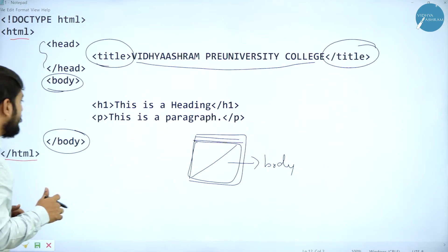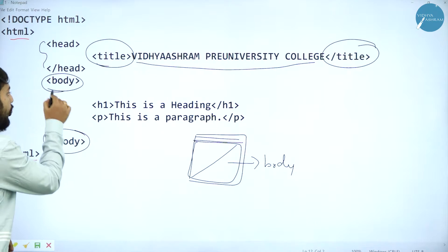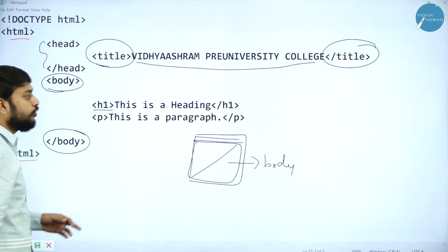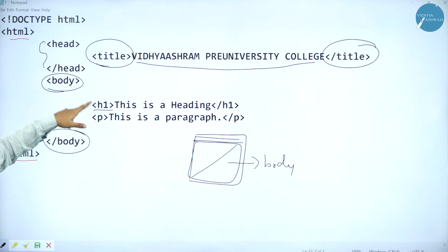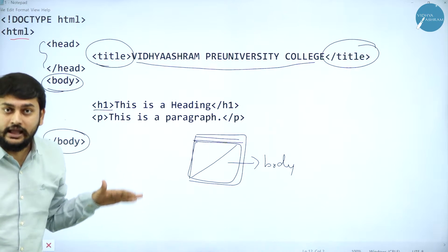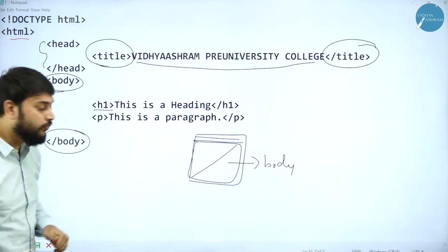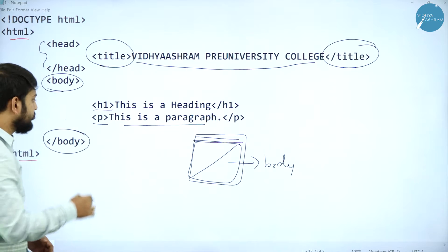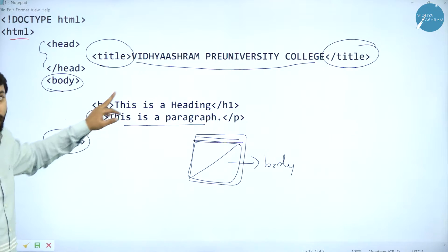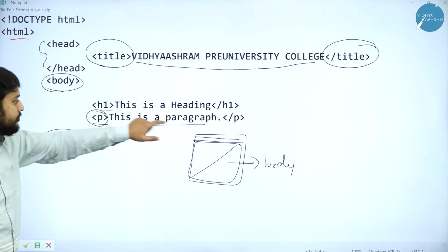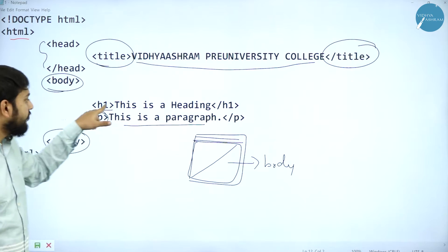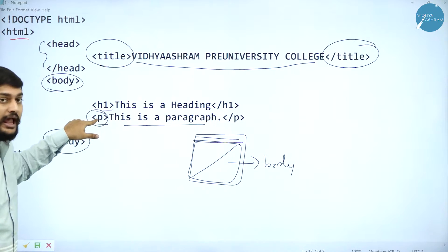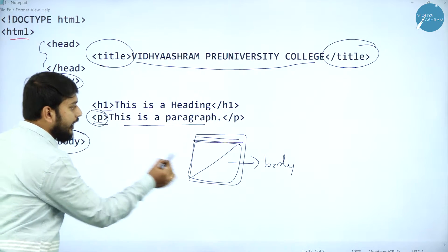So what is that I have given inside the body tag? Even the body tag I have to open and I have to close. I have given one heading. I have h1, h2, h3, h4, h5, h6 headings. In the same way, I have paragraph — if I want to write more than one line, I will be using the p tag. For both tags, I have opened and I have closed: h1 open and h1 close. For the paragraph tag also, I have opened and closed.